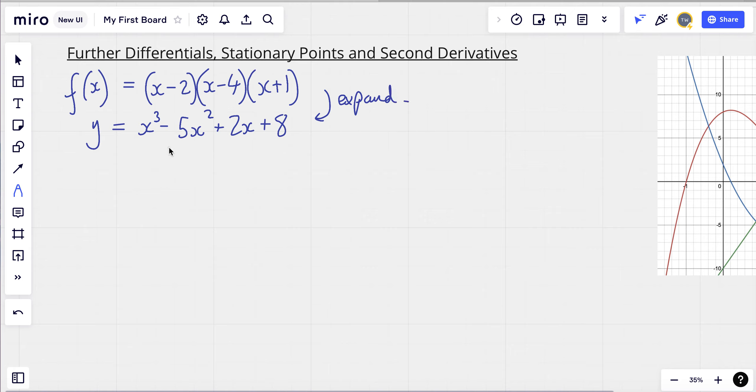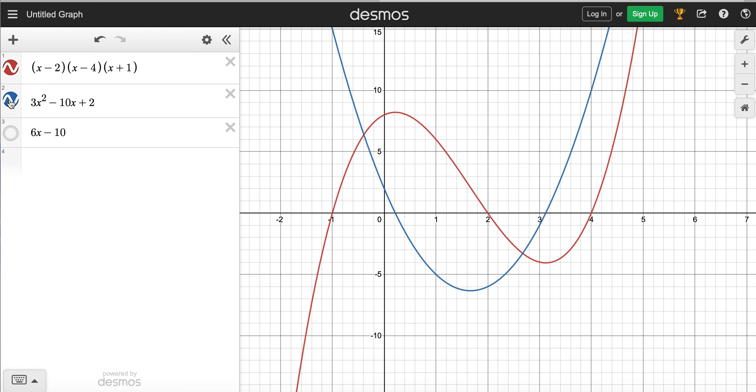So that's my graph. We know what it looks like because when it's factorized, we get three nice little points. So what I'm going to do is I'm going to differentiate it, and to do this, I'm just going to use my power rule. So, 3x squared minus 5 times 2, so 10x plus 2. You haven't got an x term, so you disappear. Now, this is my gradient function.